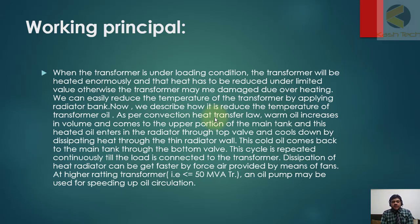This cycle is repeated and continues till the load is connected to the transformer. Dissipation of heat through the radiator can be made faster by forced air produced by means of fans at higher rating transformers. An oil pump may also be used for speeding up the oil circulation. This is basically how the radiators operate.